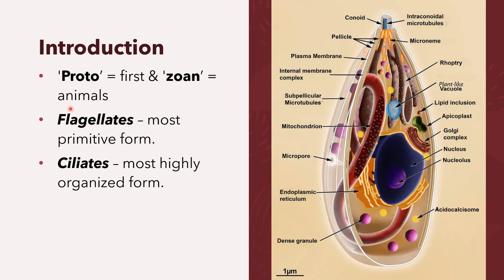The word Protozoa comes from the root words proto, meaning first, and zoa, meaning animals. They are the first animal life which appeared in this universe. Examples of Protozoa are flagellates and ciliates. Flagellates are considered to be the most primitive form of animal life, while ciliates are considered to be the most highly organized form of Protozoa.